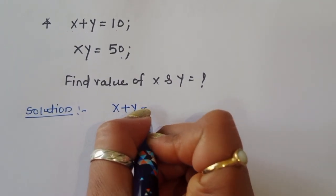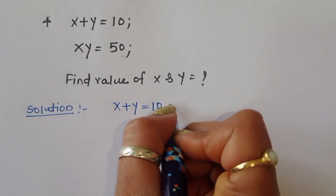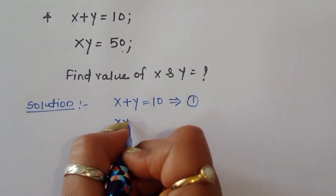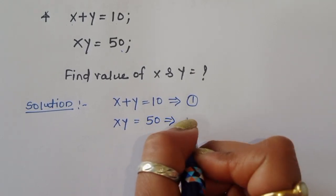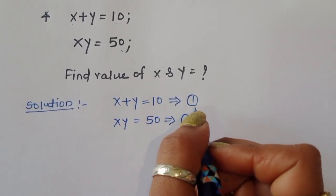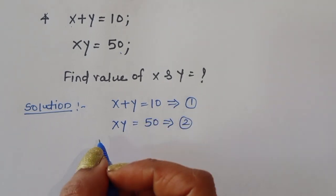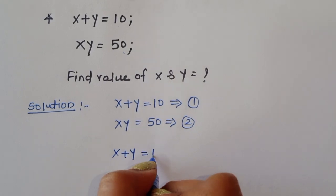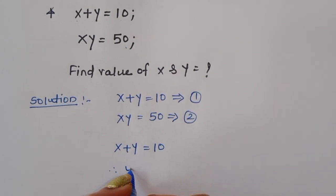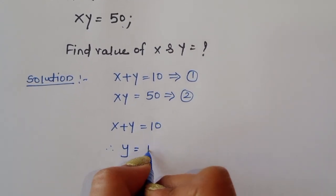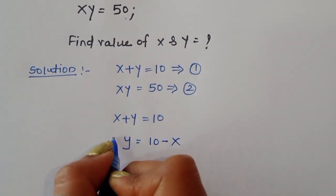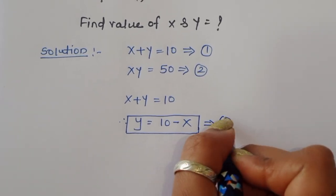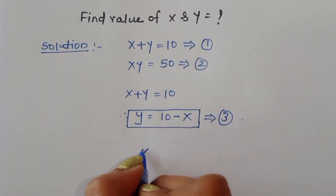x plus y is equal to 10 — call this equation number 1. xy is equal to 50 — call this equation number 2. From equation 1, we can write y is equal to 10 minus x. Call this equation number 3.